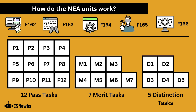Each NEA unit is split into 24 tasks: 12 pass tasks, 7 merit tasks, and 5 distinction tasks. The difference between these is usually to do with complexity. For example, pass task 1 in unit F162 uses the keyword 'describe,' merit task 1 is to 'explain,' and distinction task 1 is to 'create,' though every task should be given careful thought to meet the criteria.